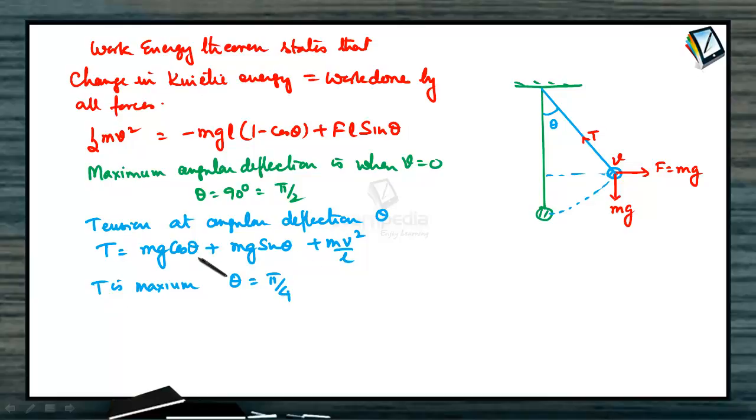Substitute theta pi by 4 here. What do you get T maximum? T maximum will be Mg cos pi by 4 plus Mg sin pi by 4 plus Mv² by L. When deflection we are taking it at the point maximum. 3 root 2 minus 2. This is the maximum deflection.